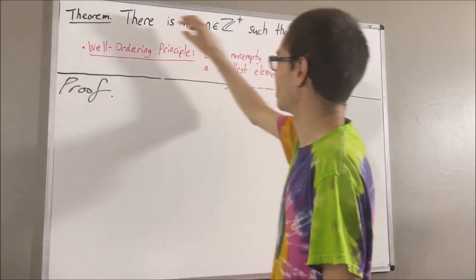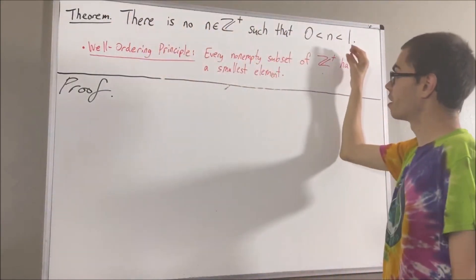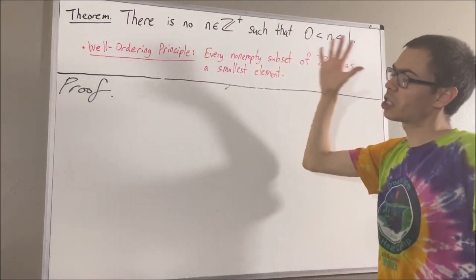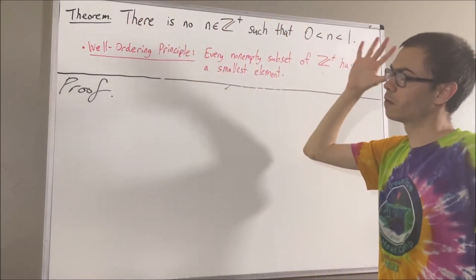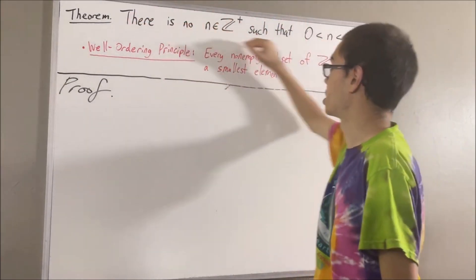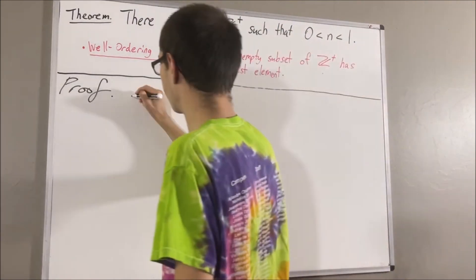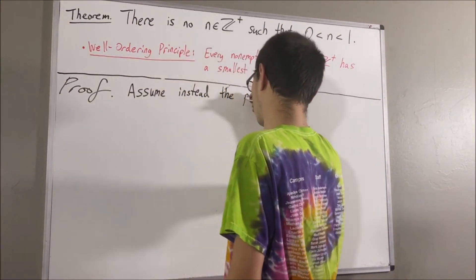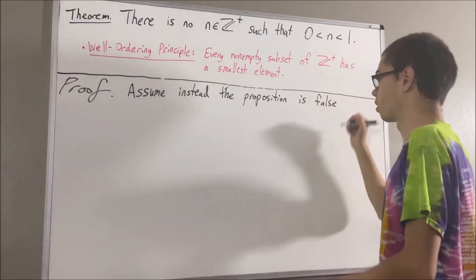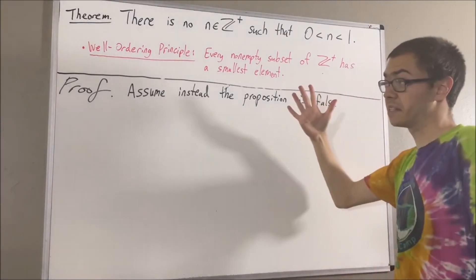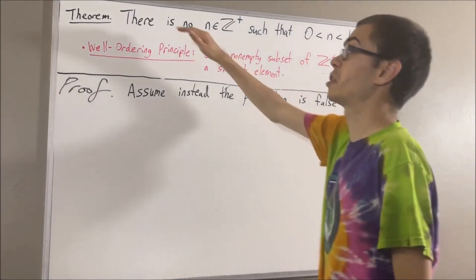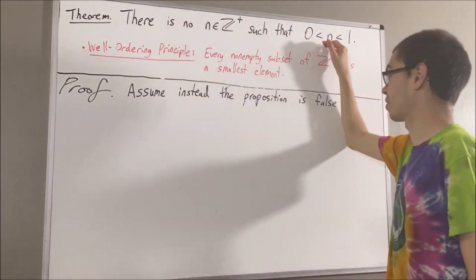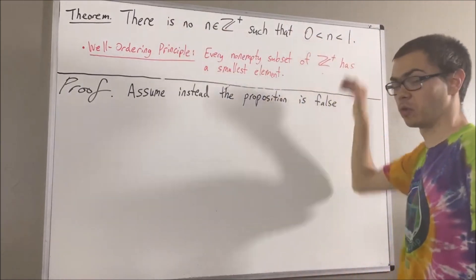So now let's get into proving this theorem. We're going to prove this theorem by contradiction. Let's assume that the proposition is false — that is, assume that there is a positive integer n such that 0 is less than n is less than 1.